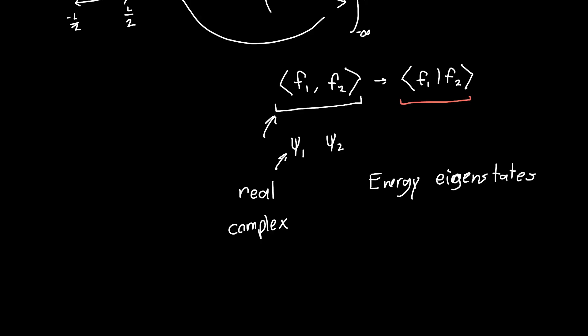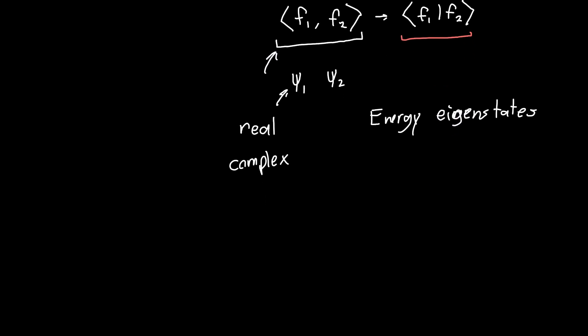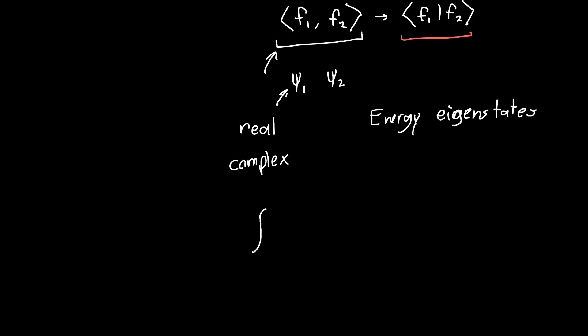We have to modify our inner product notation a little. Instead of going from minus infinity to infinity and just multiplying the two wave functions by each other and then integrating over all space, we actually need to take the complex conjugate of the first wave function. So this is the inner product: if this is equal to zero, then the functions ψ1 and ψ2 are said to be orthogonal.